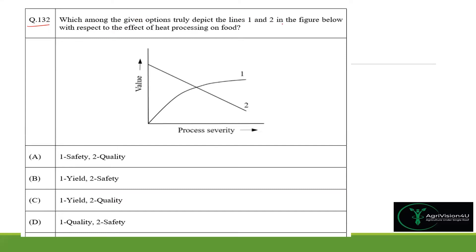The first question was related to which among the given options truly depicts line 1 and line 2 in the figure below, with respect to the effect of heating process on food. The x-axis represents process severity and the y-axis denotes the value. In line 2, the slope is constantly decreasing — the value for line 2 is constantly decreasing as process severity increases.